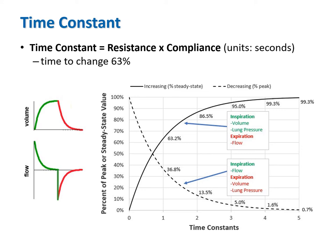A key concept in understanding ventilator waveforms is the time constant. The time constant is a characteristic of exponential curves as seen in inspiratory volume and flow waveforms during pressure control. It is calculated by multiplying resistance by compliance, with resulting units of time, usually seconds. In a period equal to one time constant, an exponential curve will change by 63%. A long time constant usually means increased resistance; a short time constant usually means decreased compliance.